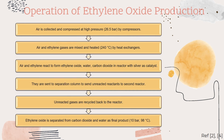First, air is collected and compressed at high pressure — 26.5 bar — by compressors. Next, air and ethylene gases are mixed and heated to 240 degrees Celsius by heat exchangers.